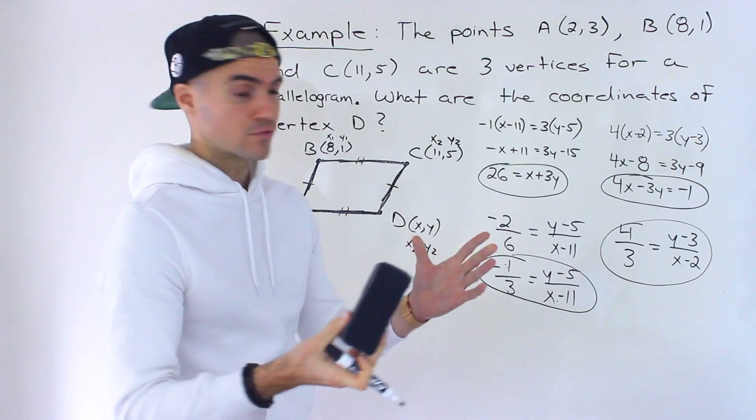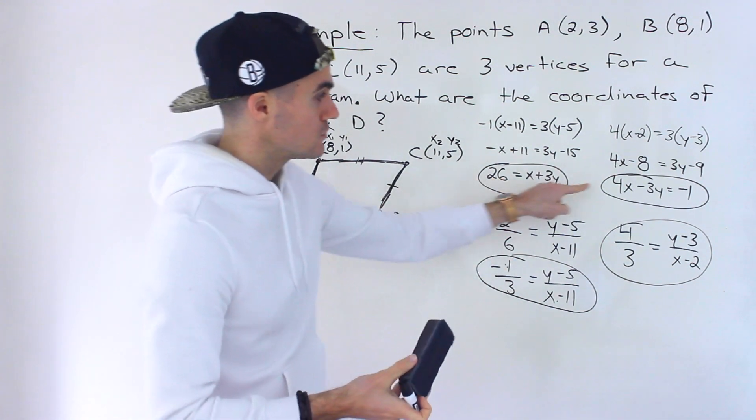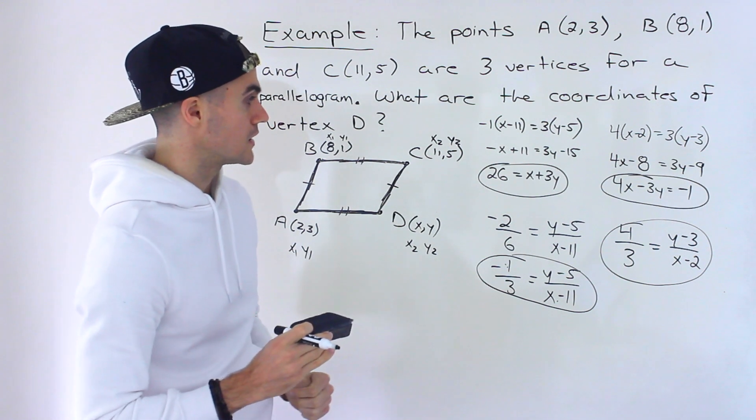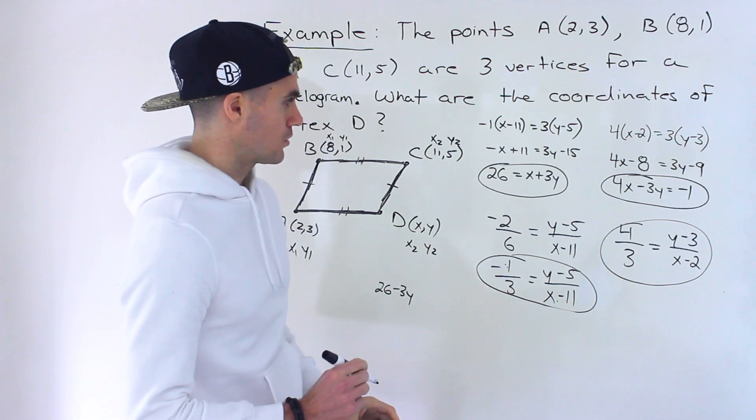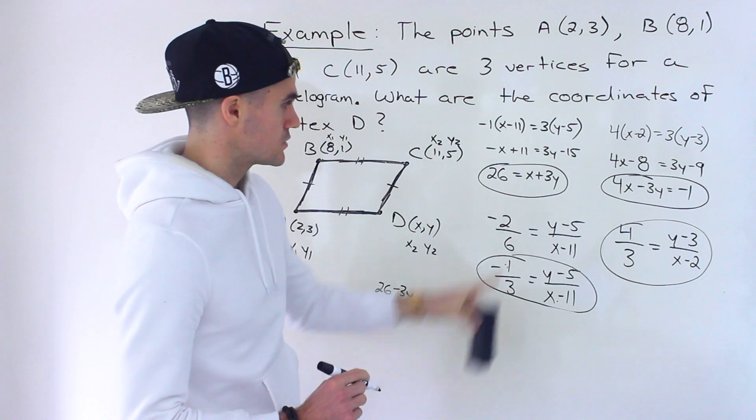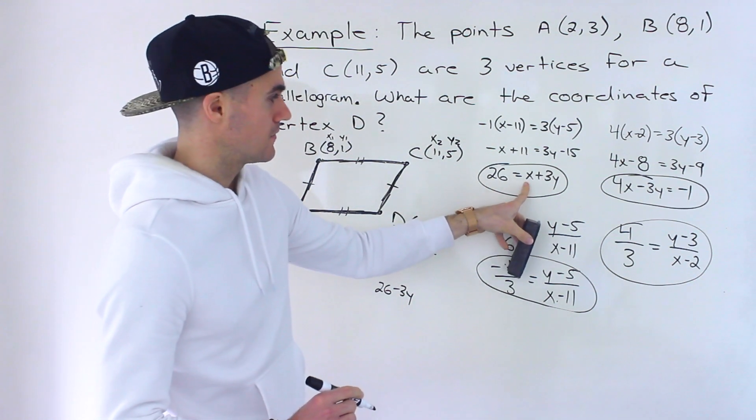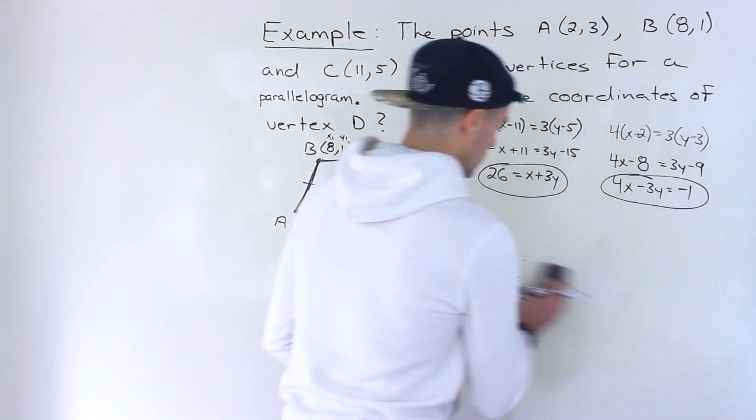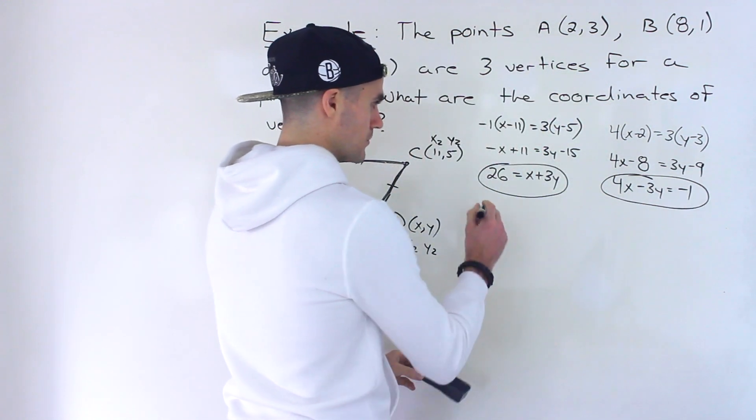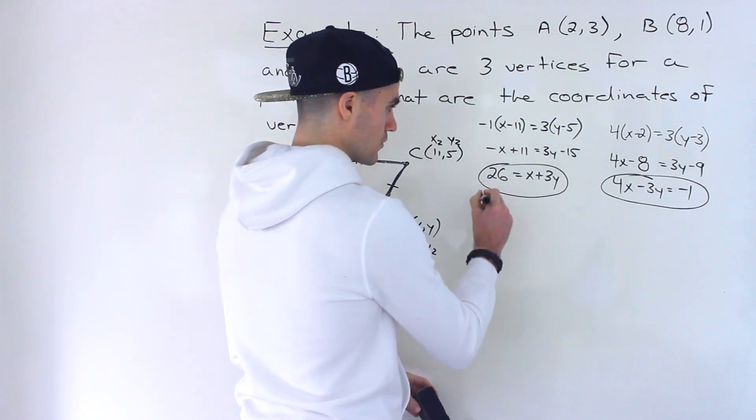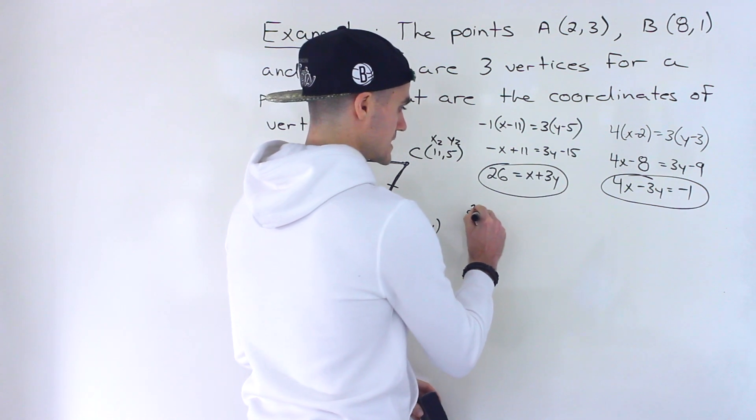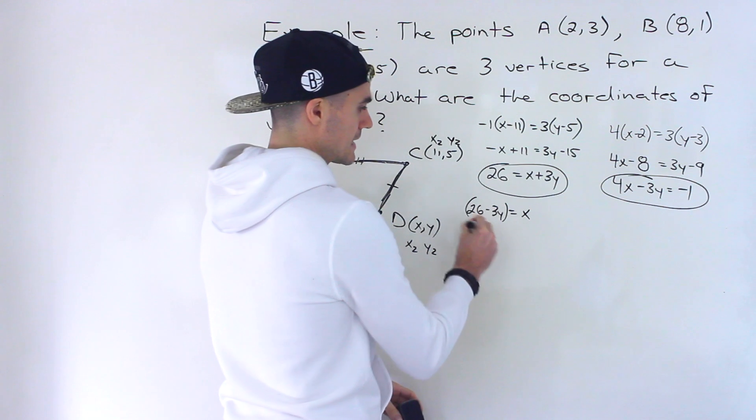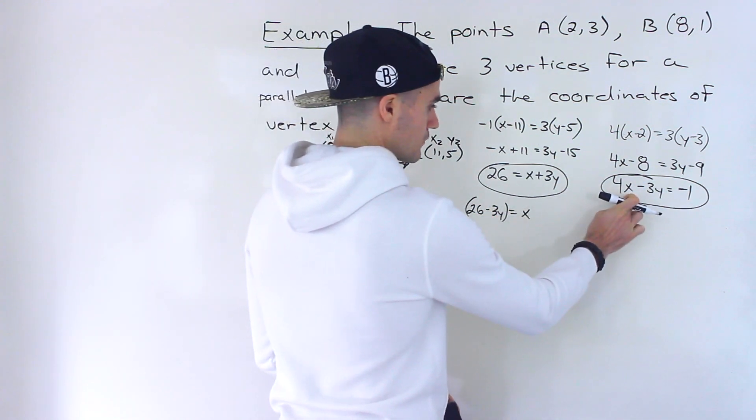And so now notice how we got rid of the fractions. And now we have two equations, two unknowns. We can use substitution or elimination. Now, what I'm going to do personally is substitution, because notice this X here, it's by itself. So I'm going to isolate for the X in this equation. So we'd end up with bringing the 3Y over. So we'd have 26 minus 3Y is equal to X. And then I'm going to take this expression and plug it in for this X.